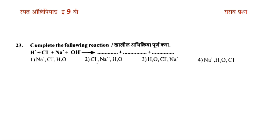The answer options for the products are: option 1 is Na⁺, Cl⁻, and H2O; option 2 is Cl⁻, Na⁺ plus H2O; option 3 is H2O, Cl⁻, Na⁺; option 4 is Na⁺, H2O, and Cl⁻.